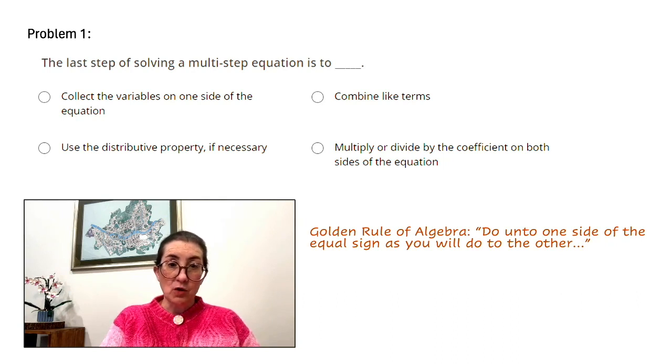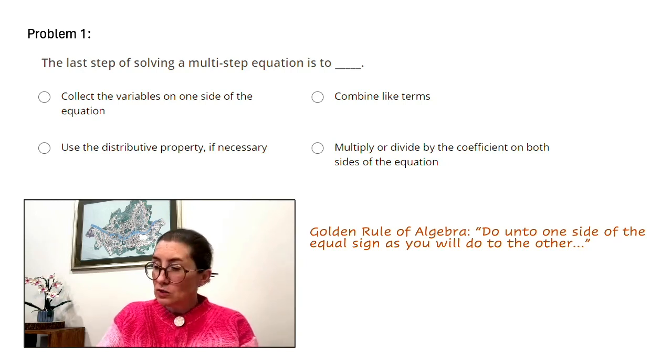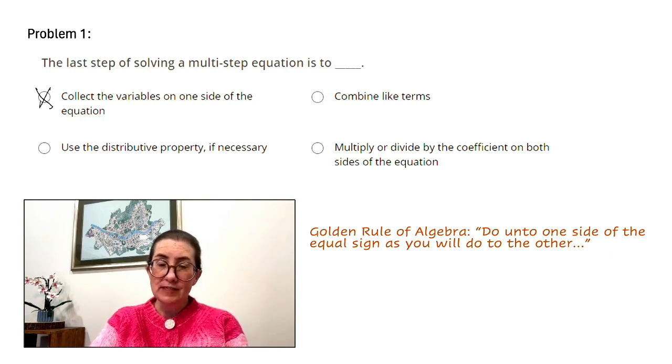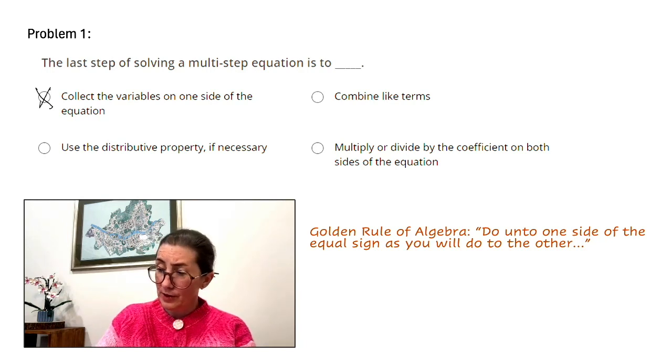Collect the variables on one side of the equation. That is actually part of step one, so that is not our answer. Combine like terms. That will be part of step three, so that is not the answer.